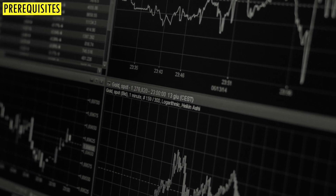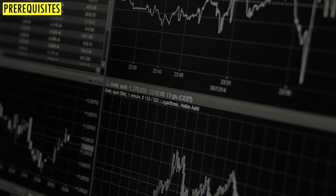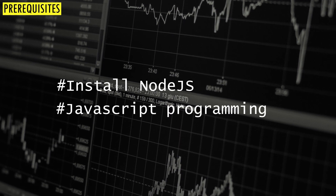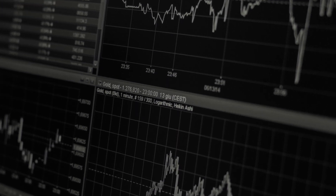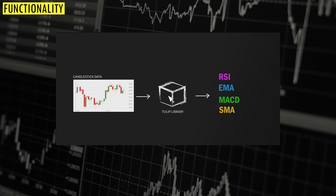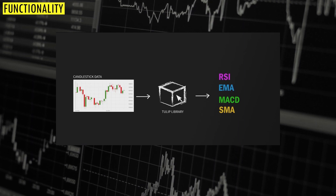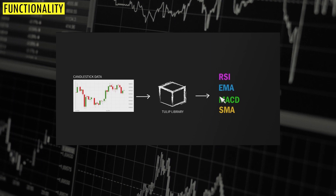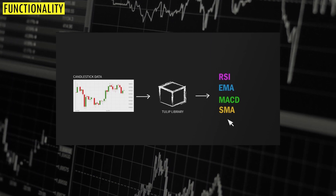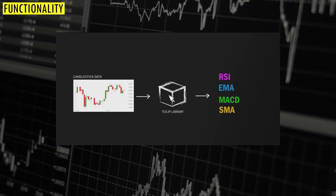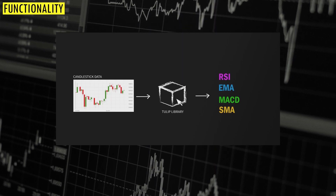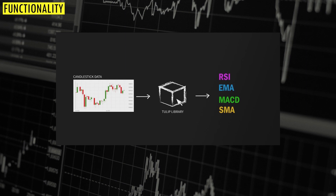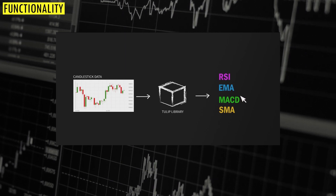Before we begin, here are some prerequisites. You need to have Node.js installed on your machine and you should also have a basic understanding of JavaScript programming. This library serves like a black box — you pass in the candlestick data on one end and receive the corresponding indicator value on the other end, obfuscating the underlying math.